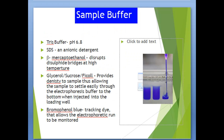The sample buffer contains Tris buffer at pH 6.8 and SDS. Beta-mercaptoethanol disrupts disulfide bridges at high temperature. Glycerol, sucrose, or Ficoll provides density to the sample, allowing it to settle easily through the electrophoresis buffer to the bottom when injected into the loading well. Bromophenol blue is a tracking dye that allows the electrophoretic run to be monitored.